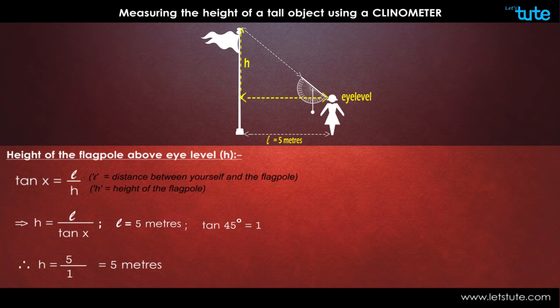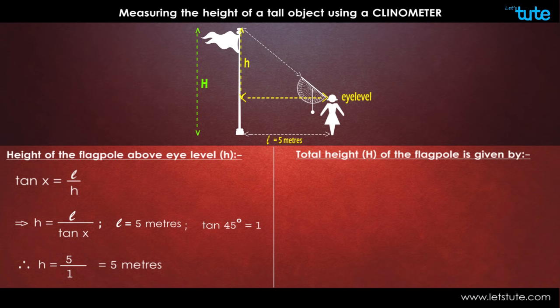Now next, we move on to the entire height of the object. The height H of the object is now given by H equals l upon tan x plus d. We have already calculated the value of l upon tan x, and d is the height of your eyes from the ground.